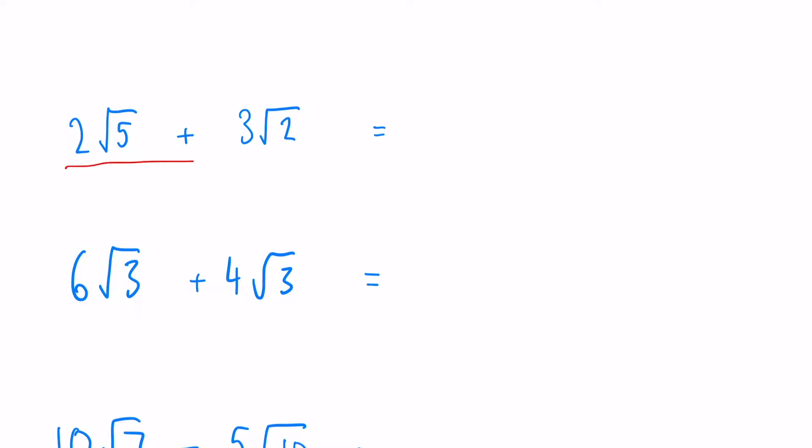Now straight away we can see that our square roots here are different numbers, so we cannot actually simplify that down at all. Obviously it will become a decimal if you were to put it in a calculator, but in terms of surd form there's no real way of writing it.